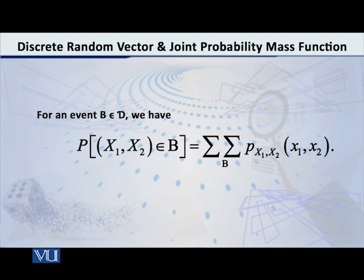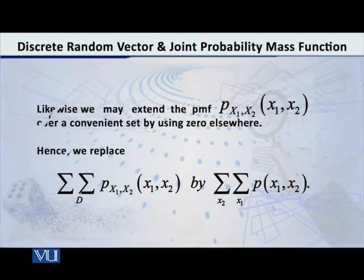Another thing I would like to share with you, and that is that generally, we do not write space D. We can actually simplify matters. We can extend our probability mass function, P of the variables X1, X2, at the point small x1, small x2, we can extend it over a convenient set by writing 0 elsewhere.